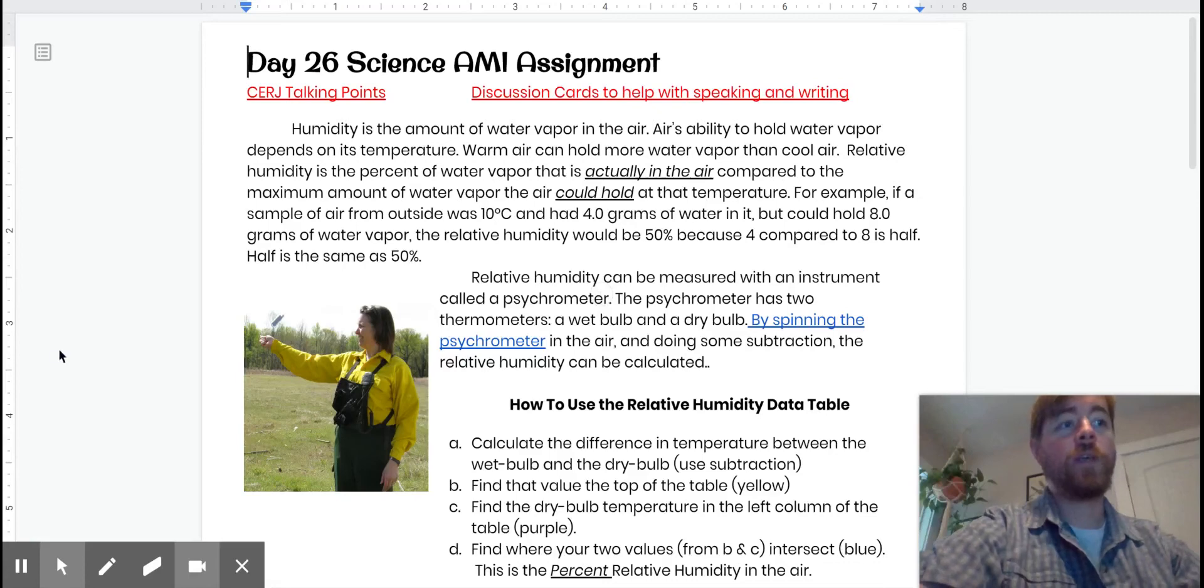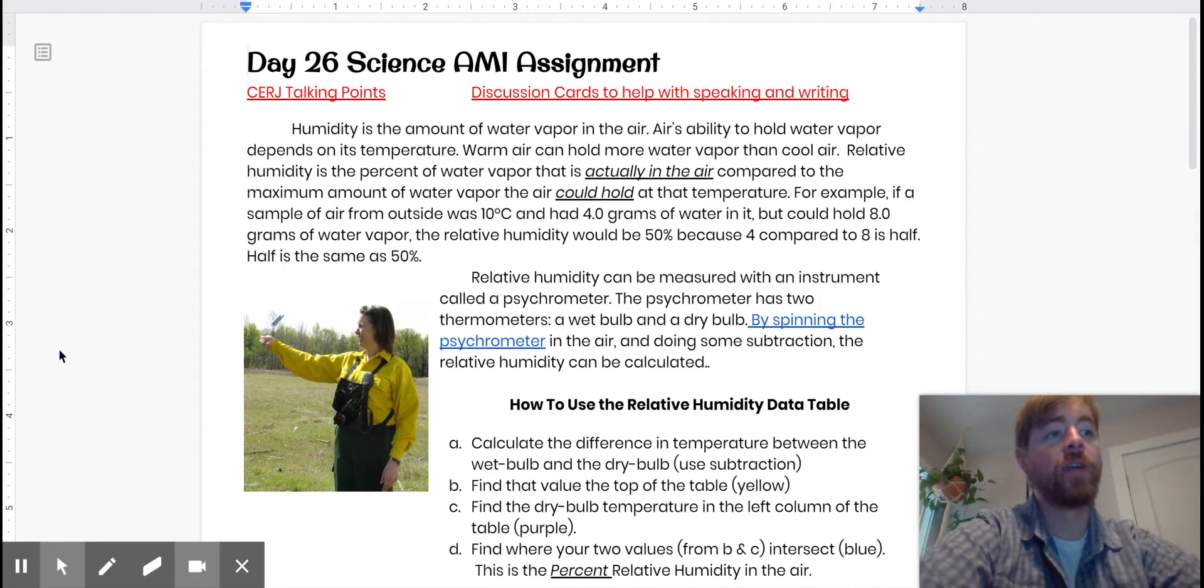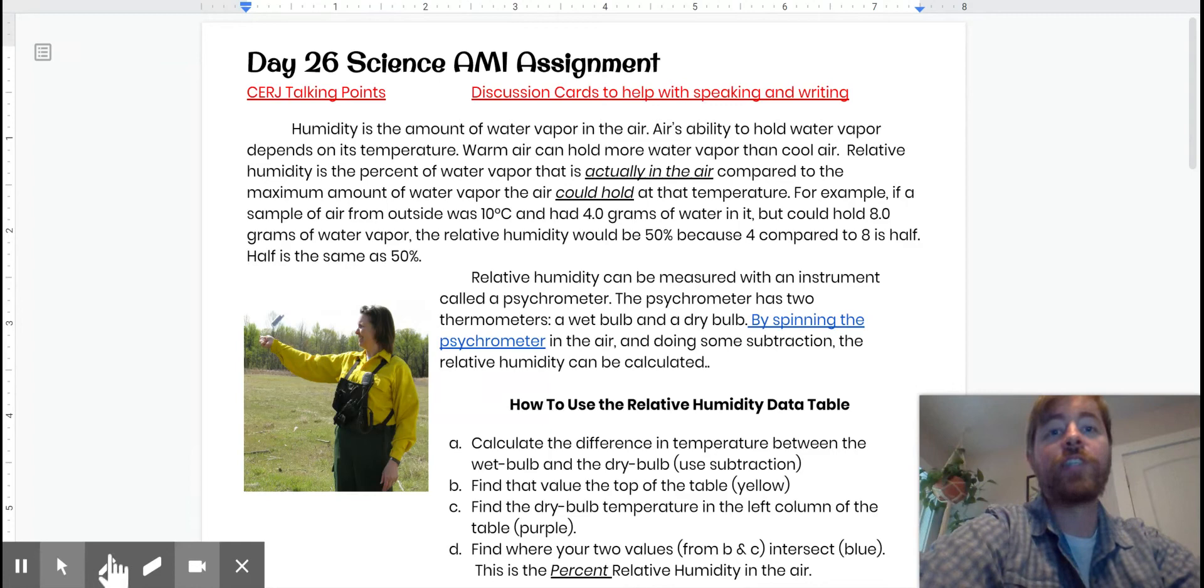Hey everybody, it's Monday. This is AMI Day 26 and today we're going to be talking about one of my favorite scientific instruments, the sling psychrometer. In just a bit I'll explain all about the sling psychrometer and how it works. So let's just jump right in. Hope everybody had a great weekend.